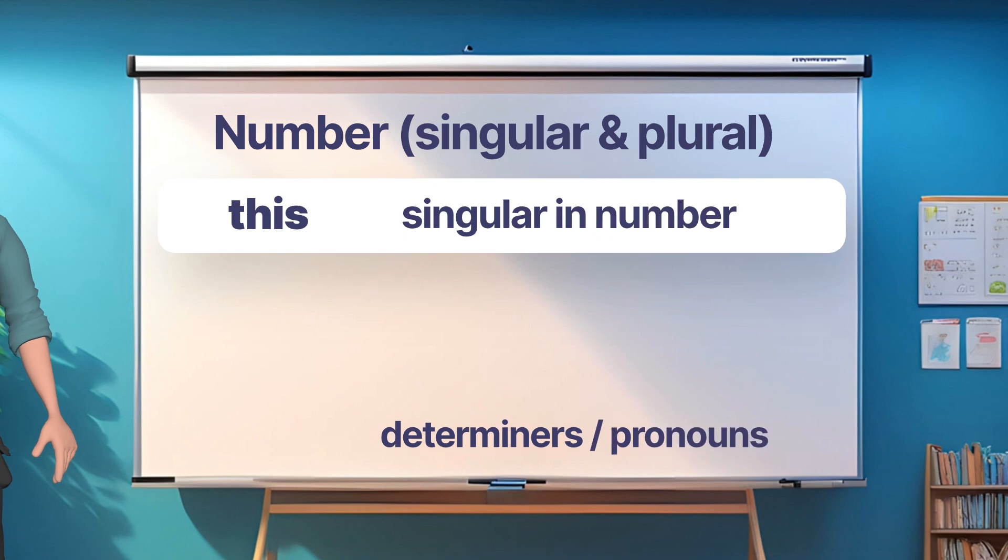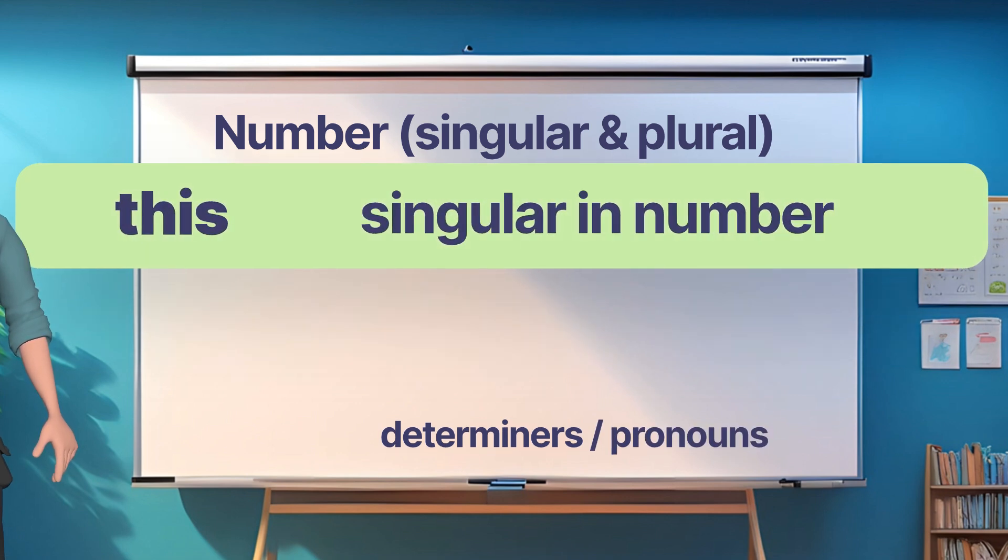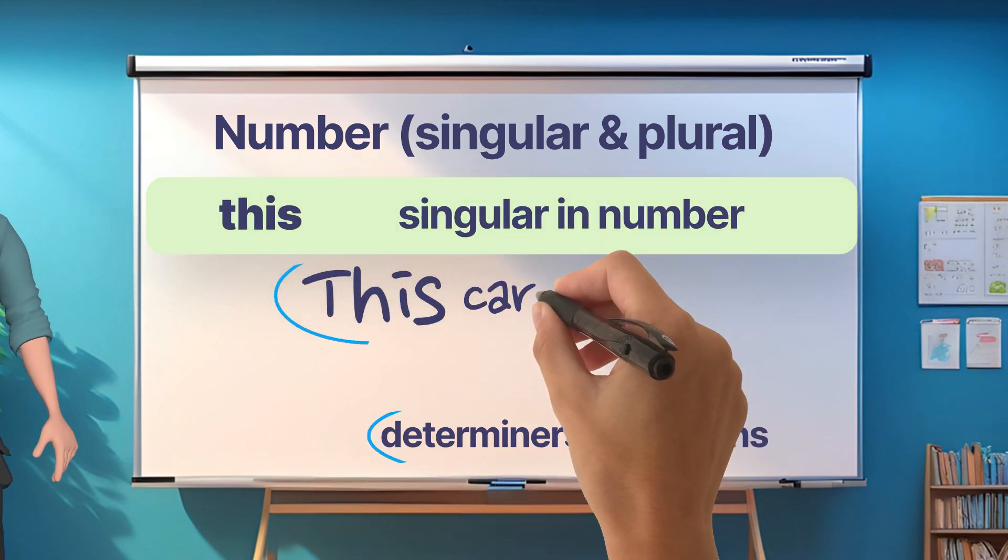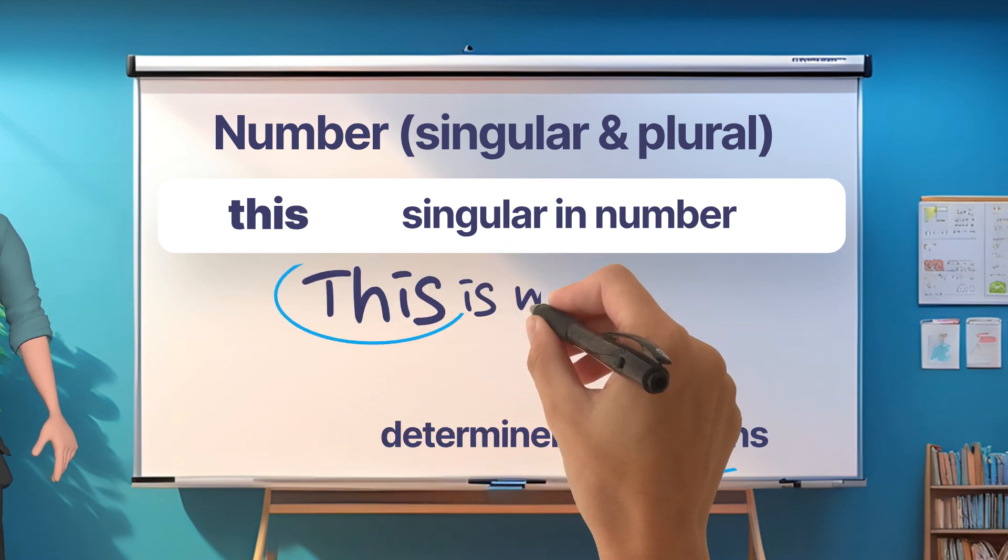The determiner this, which is singular number, as in this car is mine. This is mine, as the pronoun.